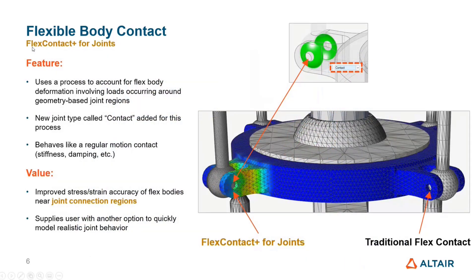Flex Contact for Joints refers to the methodology where, if you have joints in the model, you can change the joint type from the drop-down. There is a new joint type called Contact, which calculates additional enhanced mode shapes based on joint information and adds them to the CMS. This gives you enhanced mode shapes for the flex body analysis at joint regions. The requirement is that you have geometry in place to utilize this feature.